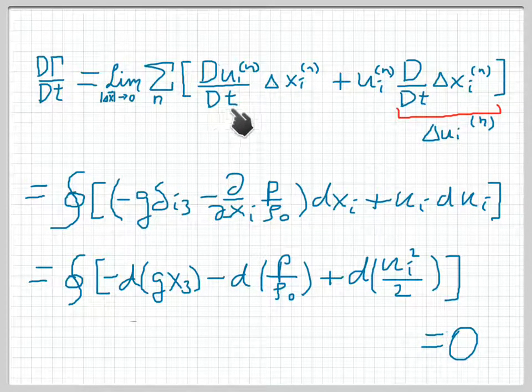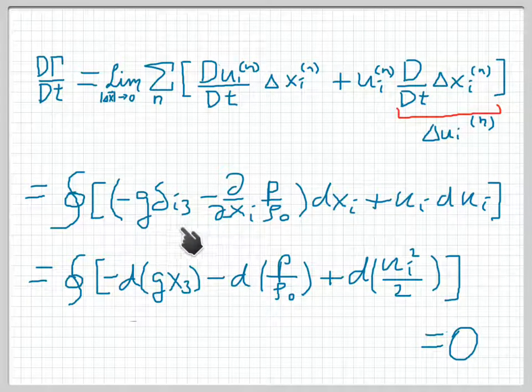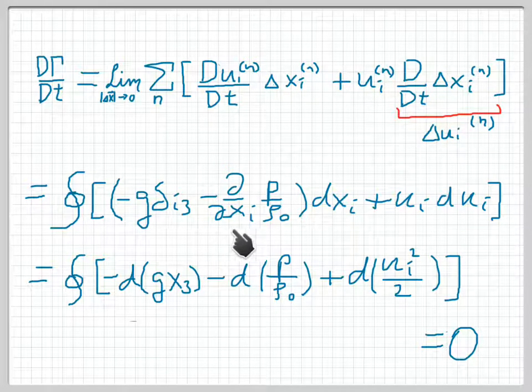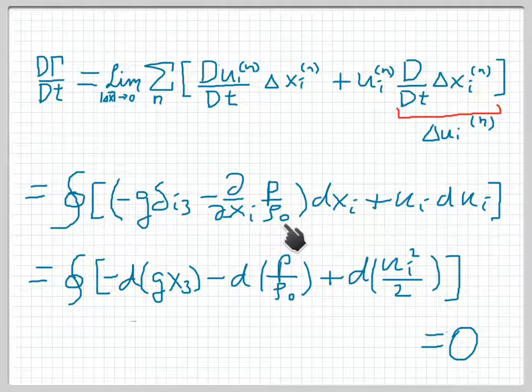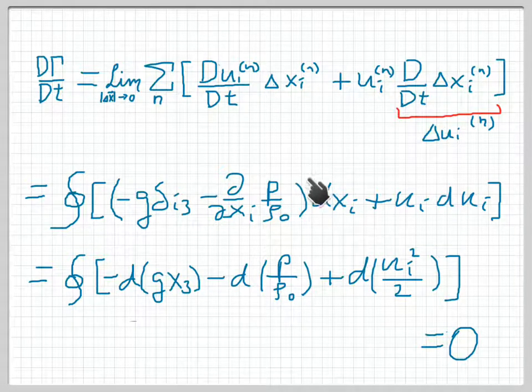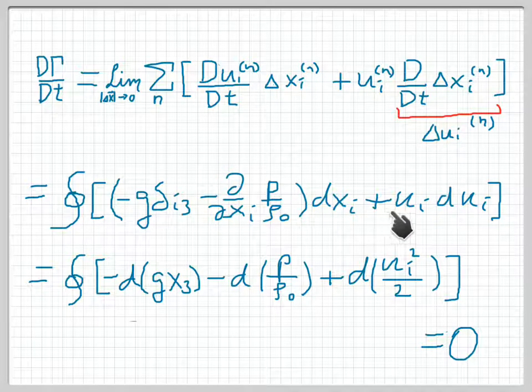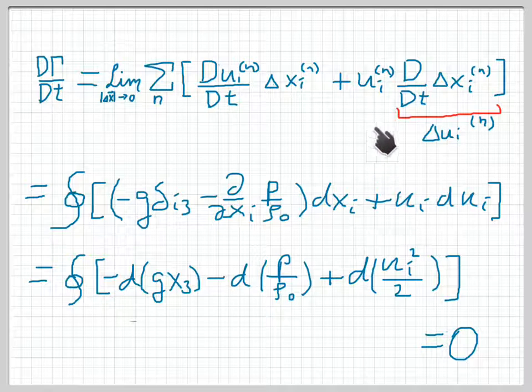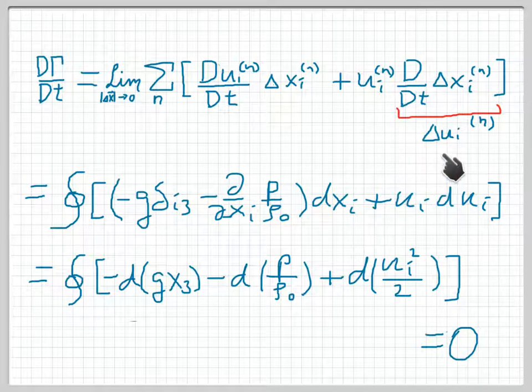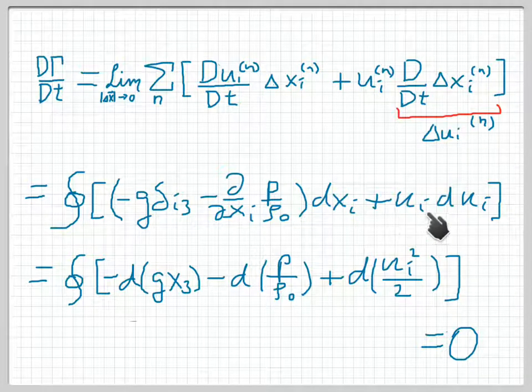the gravitational force minus g δi3 minus the gradient of the pressure, d by dxi of pressure over the density ρ₀, and then the Δx's become just a standard differential dxi. Likewise, the u term is ui Δui, and in the limit as Δui goes to zero, this goes to ui dui.